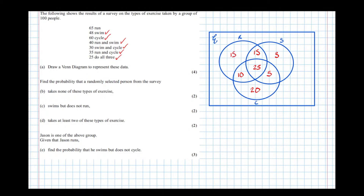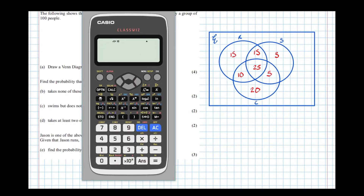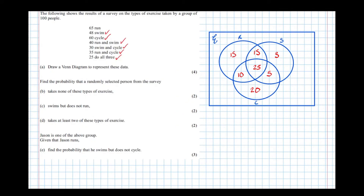So 100 people were surveyed. Let's count these all up: 15 plus 10 plus 20 plus 25 plus 5 plus 15 plus 3 equals 93. They don't add up to 100, which means there must be some people that don't do any of the three activities. Therefore those 7 people go outside of R, S, and C but inside the universal set. That's the purpose of the box containing everything. That's Part A finished.